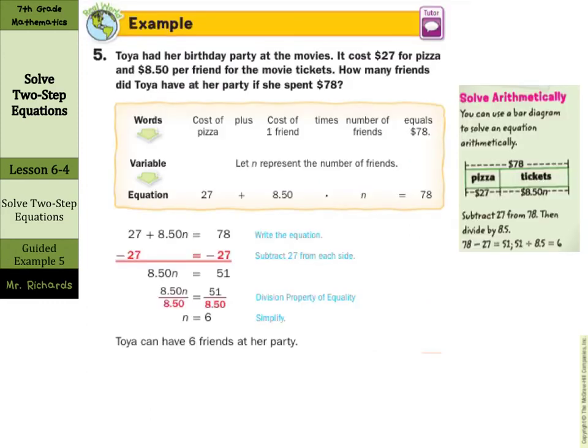And now for our last example, our word problem here. Toya had her birthday party at the movies. It cost $27 for pizza, and $8.50 per friend for the movie tickets. How many friends did Toya have at her party if she spent $78? Well, let's see how they set this up. We have the cost of the pizza at $27. It's going to be $27 no matter how many people she had over. Then it's $8.50 per friend times the number of friends, which is how you have the 8.50n there. And that equaled $78.